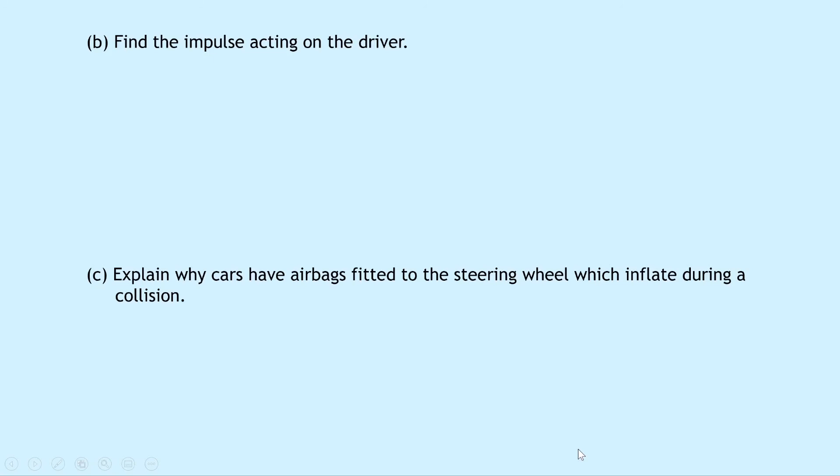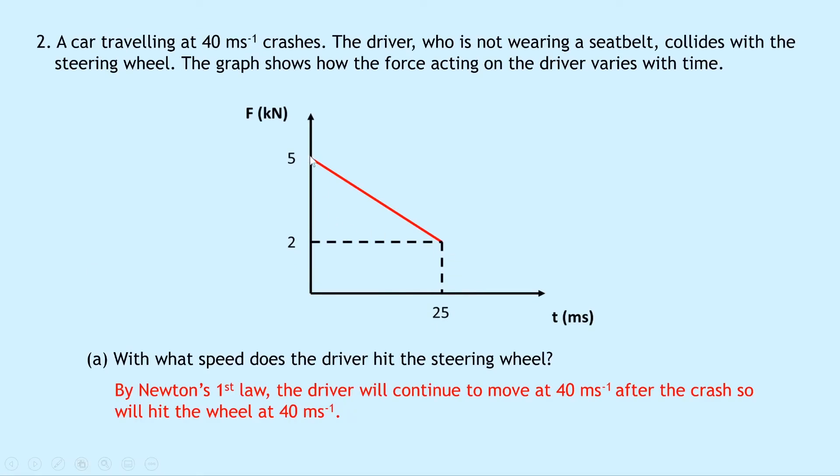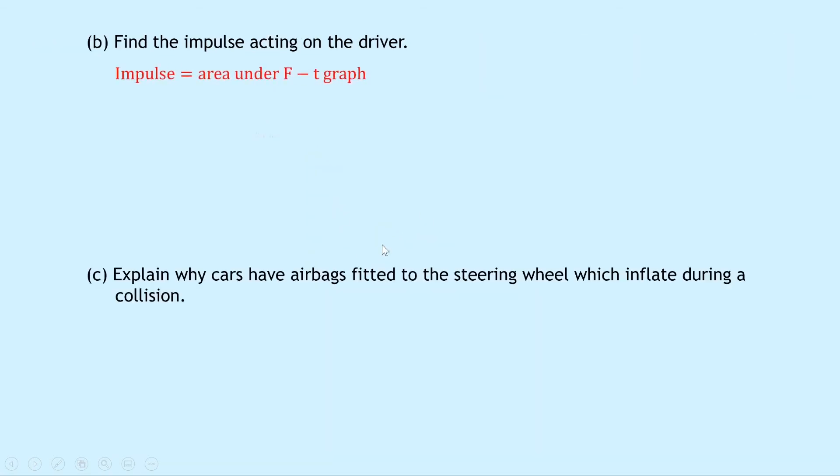Part b says to find the impulse acting on the driver. So the impulse remember is equal to the area under the force-time graph and in this case remember it's the area under this entire thing so even though the line stops there we need to take into account the whole area under that graph. So we can split this into two a rectangle and a triangle so we're going to have our half times base times height plus our length times breadth. So putting in our numbers from the graph we have half times 25 times 10 to the minus 3 that was our 25 milliseconds for the triangle base times the height of the triangle which was 3 kilonewtons which is 3 times 10 to the 3 newtons plus our length times breadth from the rectangle so we have our 25 milliseconds 25 times 10 to the minus 3 times 2 times 10 to the 3 which was the height of the rectangle which was 2 kilonewtons. So putting that into your calculator we should get 87.5 newton seconds.